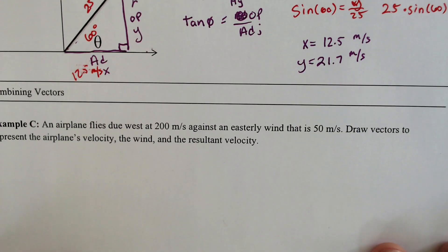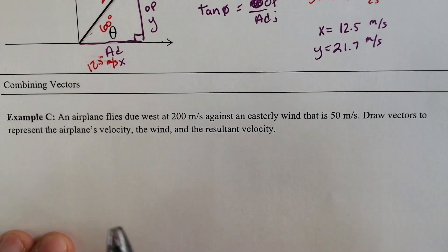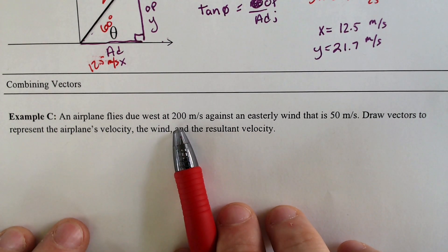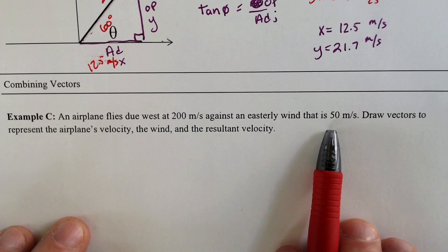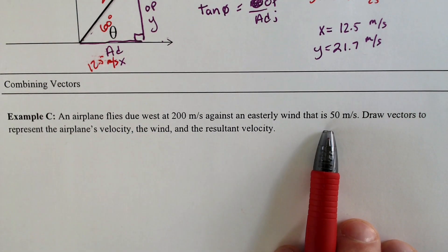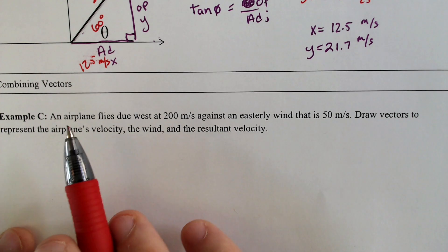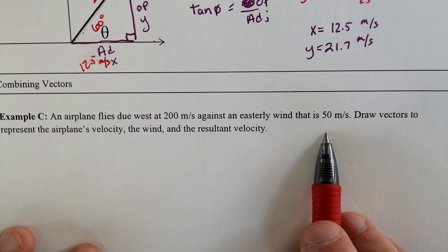For instance, we have an airplane, and this airplane is traveling due west at 200 meters per second against an easterly wind of 50 meters per second. Draw the vectors and determine some other things about it. So we got, due west at 200 meters per second, and the wind is pushing back at 50 meters per second.